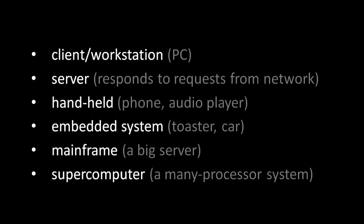Handheld systems, like smartphones, and embedded systems, like your car's computer, are also comprised of the CPU, memory, and I/O devices. The distinction is mainly in the form factor — the size and shape of the encasing — and also in the performance needs. For example, your toaster doesn't need much processing power, and your smartphone needs power efficiency much more than your desktop PC.